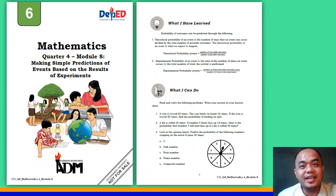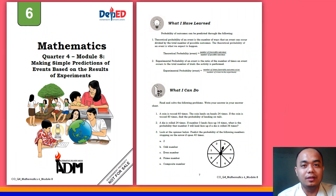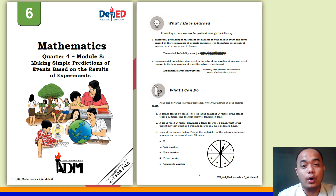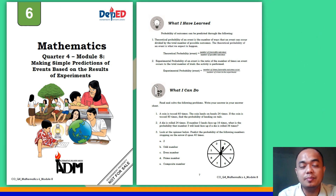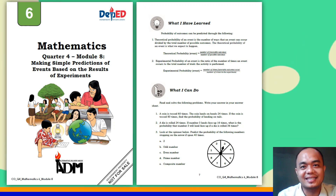Hello everyone! How are you today? I am your teacher, Jem Raimon, and today we will discuss the 'What I Have Learned' part and the 'What I Can Do' part of your Module 8, which is entitled Making Simple Predictions of Events Based on the Results of Experiments.